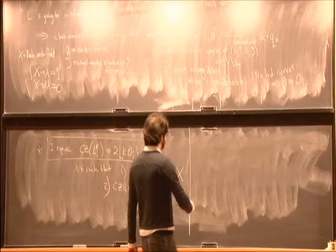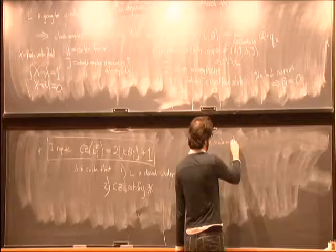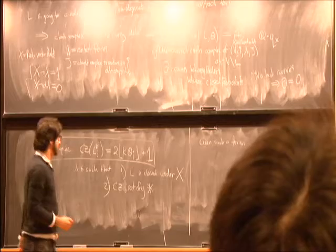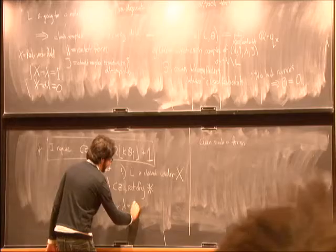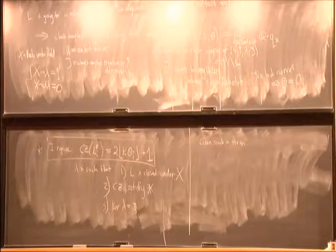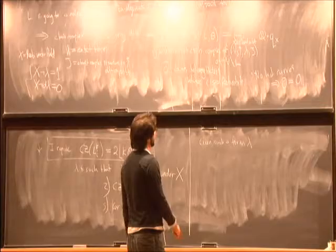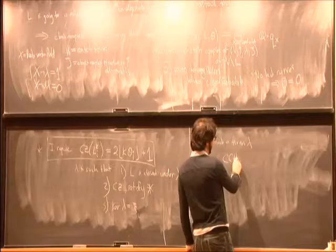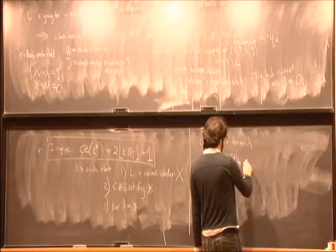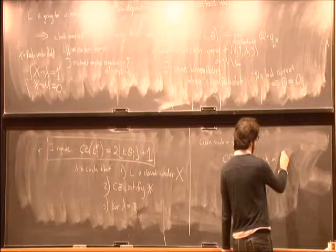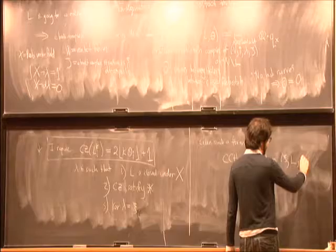Given such a contact form satisfying all these requirements — non-degenerate, no contractible Reeb orbits in the complement, kernel λ equal to the contact structure C — one can construct this chain complex. The homology of this complex, which I'll denote by adding H* after this notation, depends only on the data of the contact structure, these loops L, and these irrational numbers θ.